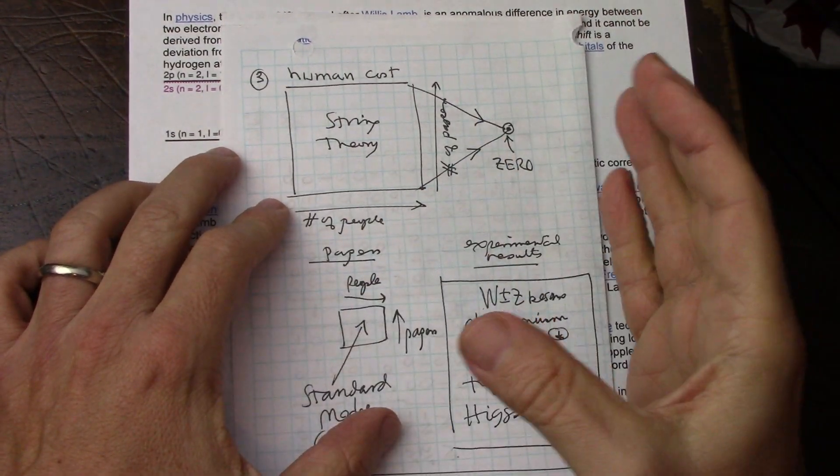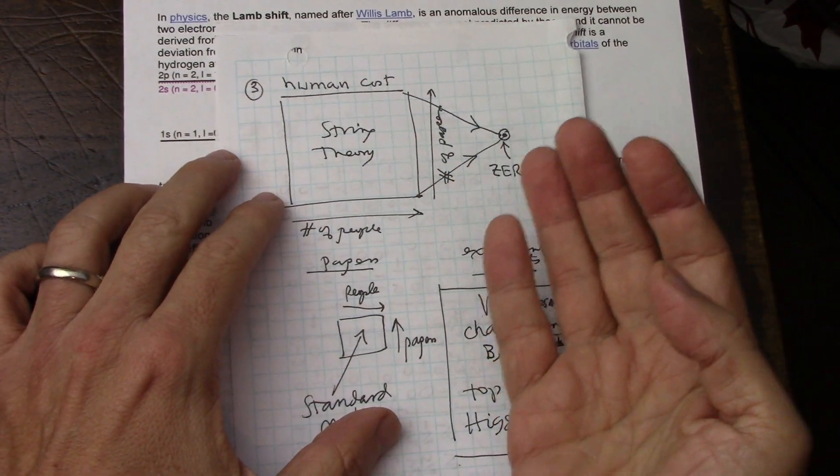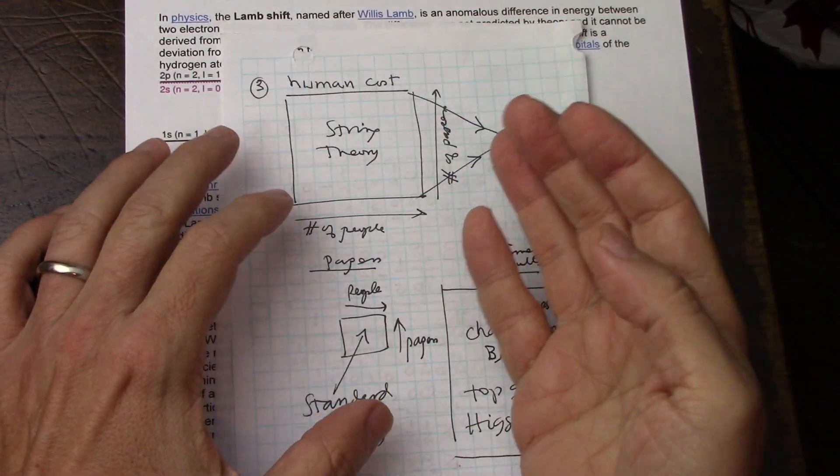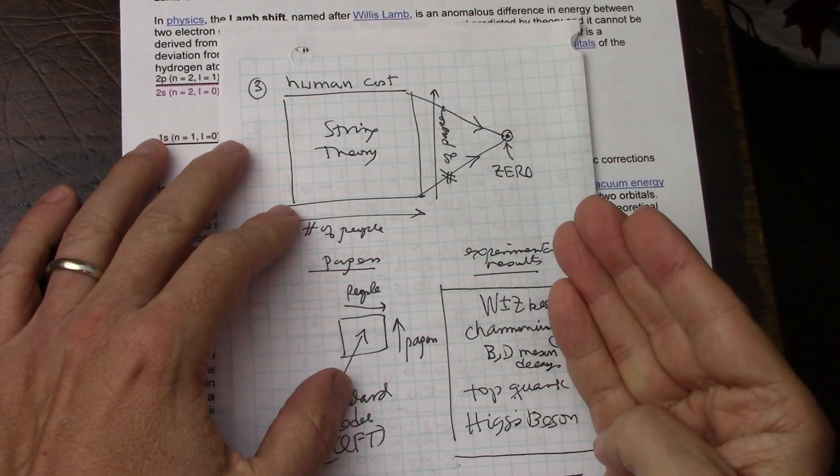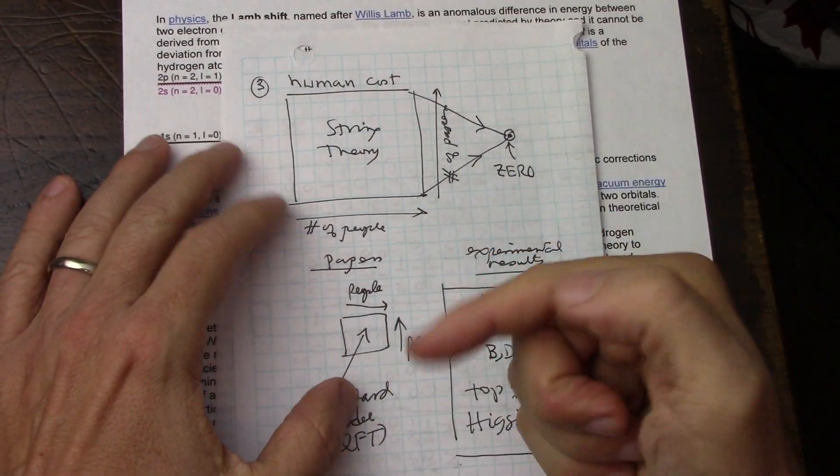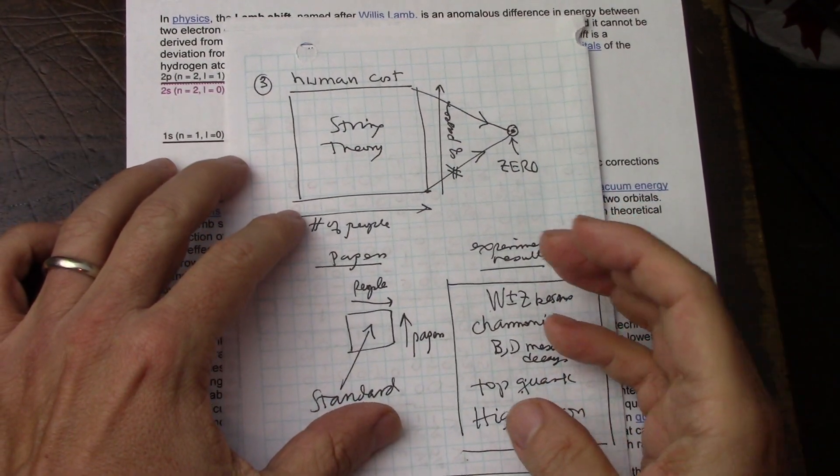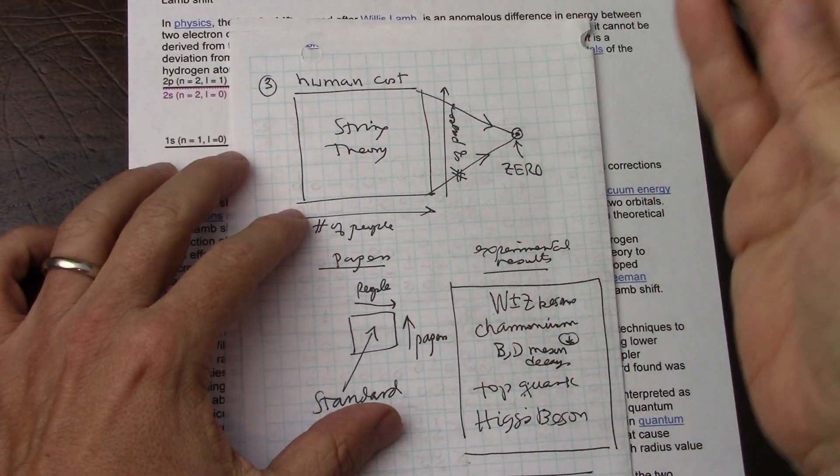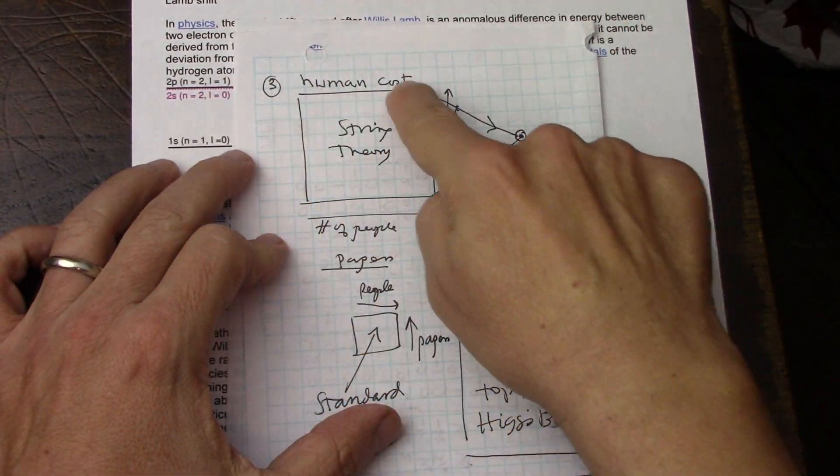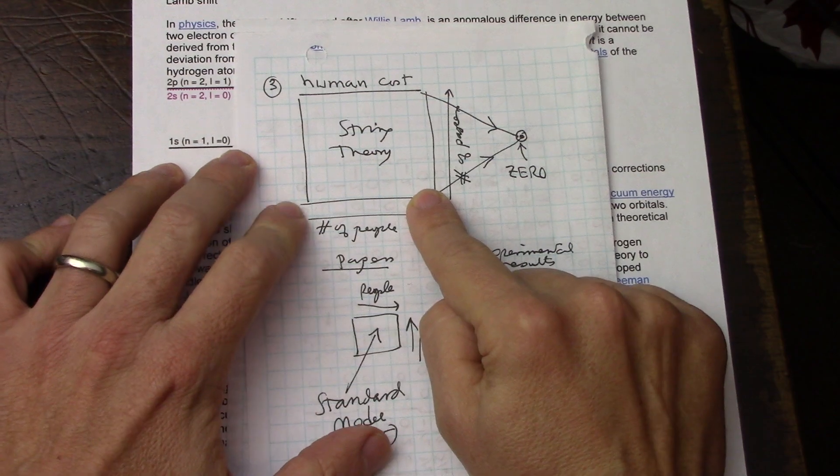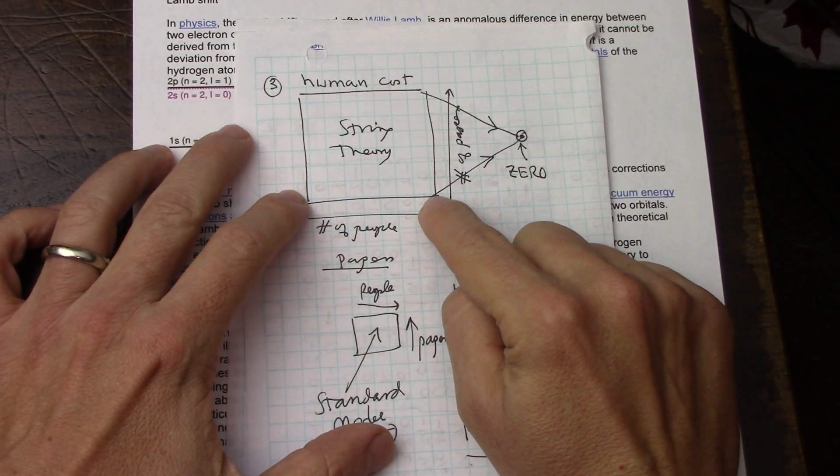The entire field of theoretical particle physics, basically, you had to be a string theorist to be called a theoretical particle physicist. Mostly. Somebody can debate me, but that's how I felt when I was in that field, in the experimental side, but I interacted with theorists, I was around theorists, there were some of my faculty members, some of my teachers.